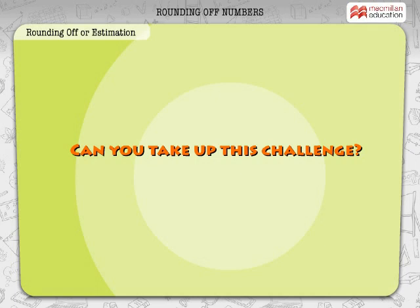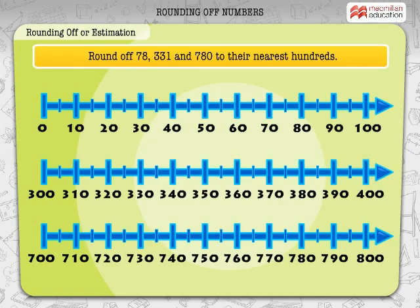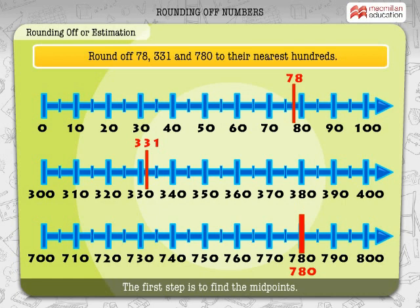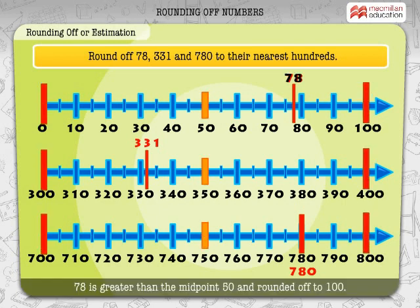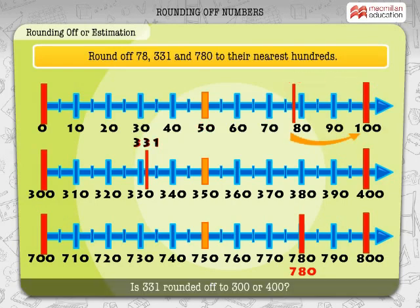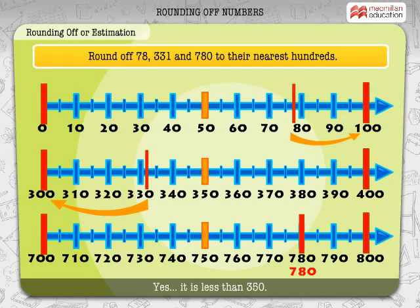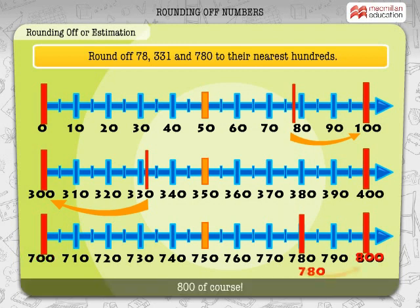Can you take up this challenge? Round off 78, 331, and 780 to their nearest hundreds. The first step is to find the midpoints. 78 is greater than the midpoint 50 and is rounded off to 100. Is 331 rounded off to 300 or 400? It is 300 — yes, because it is less than 350. Is 780 rounded off to 700 or 800? 800, of course — it is greater than 750.